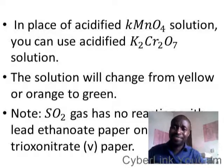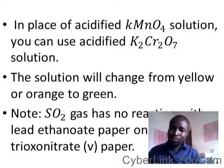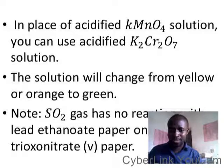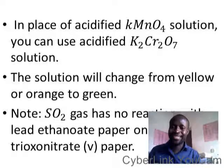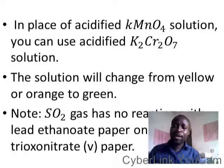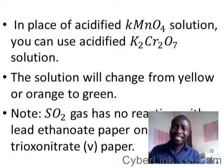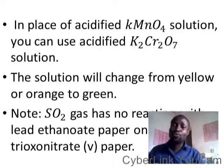In place of acidified potassium tetraoxomanganate-7 solution, you can also use potassium heptaoxodichromate-6 (K₂Cr₂O₇). A solution of K₂Cr₂O₇ comes in either yellow or orange color. When you soak the filter paper into this solution and place it inside the container with the unknown gas, if the gas is hydrogen sulfide, the color of K₂Cr₂O₇ will turn green — changing from yellow to green or from orange to green.